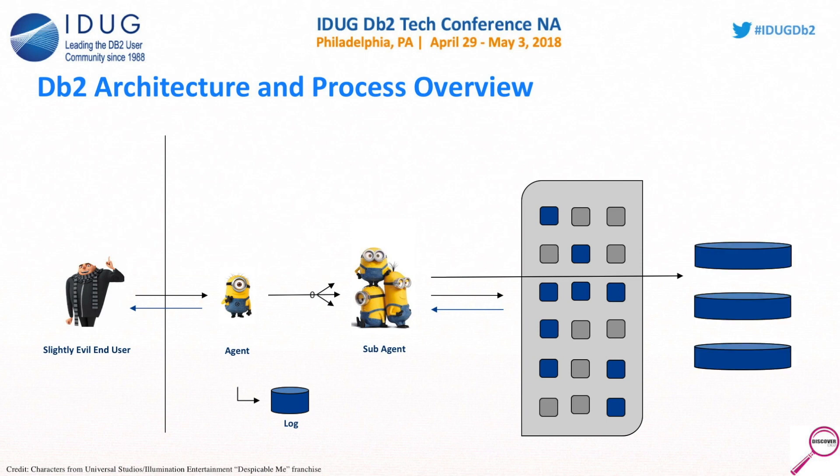If things are not in memory, your agent has to go out to disk. This is an extra step, so it's always slower — you have to physically spin spindles. Or you're accessing SSD, and though SSD sounds fast, it's still an extra step and still not as fast as being in memory. So if you can't get to things in the buffer pool, the agent is going to go straight to disk to get the information it needs.